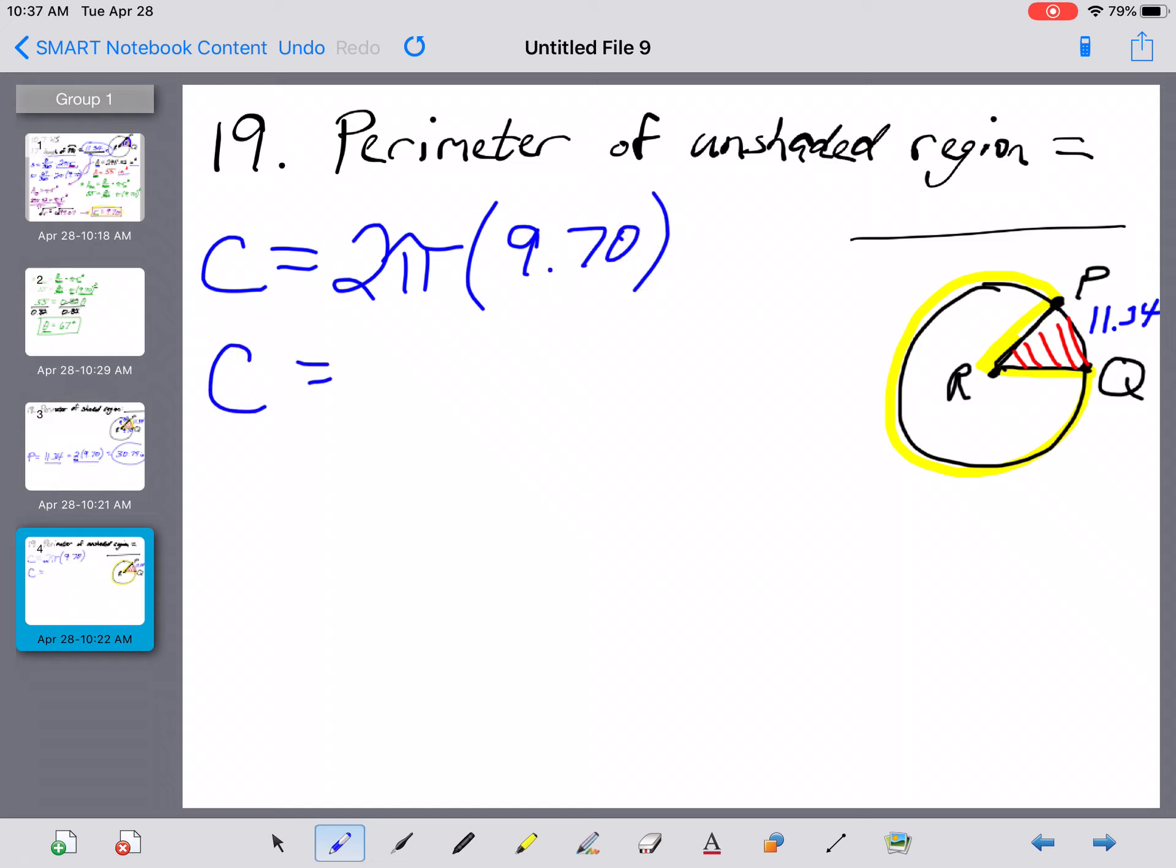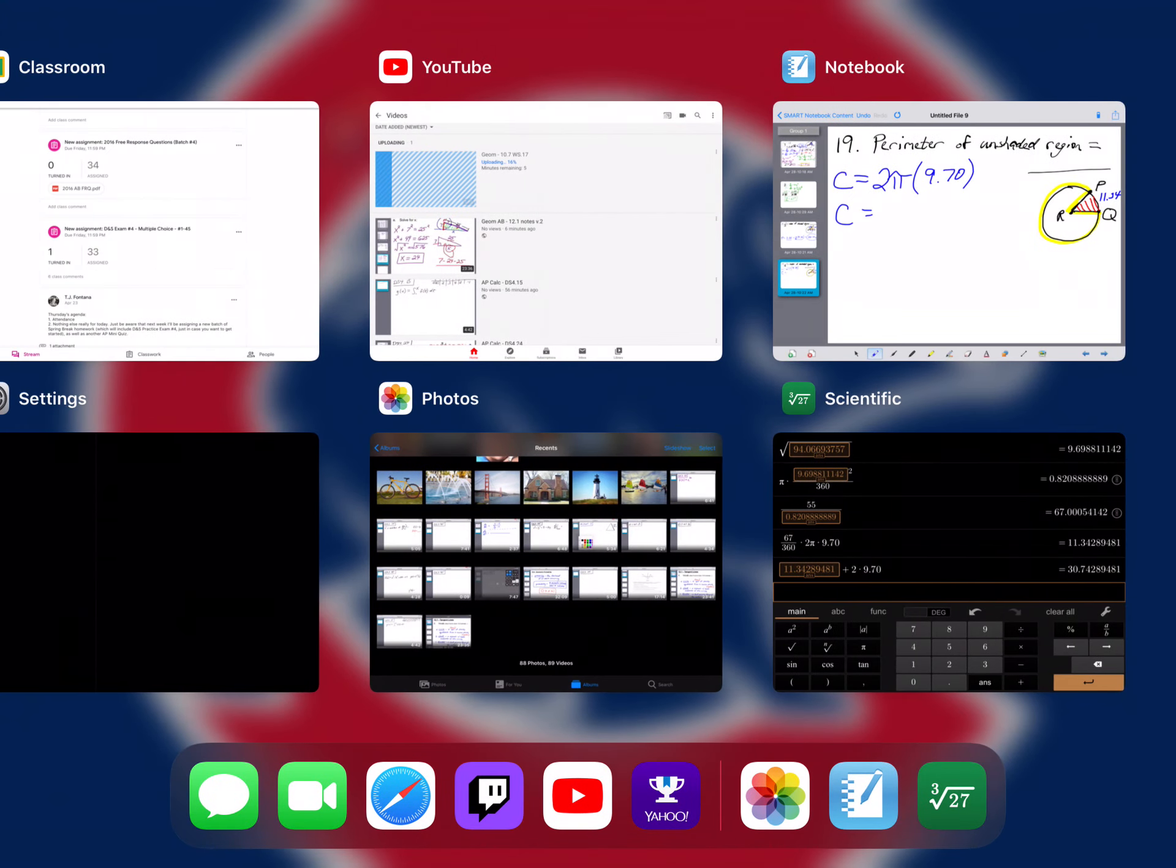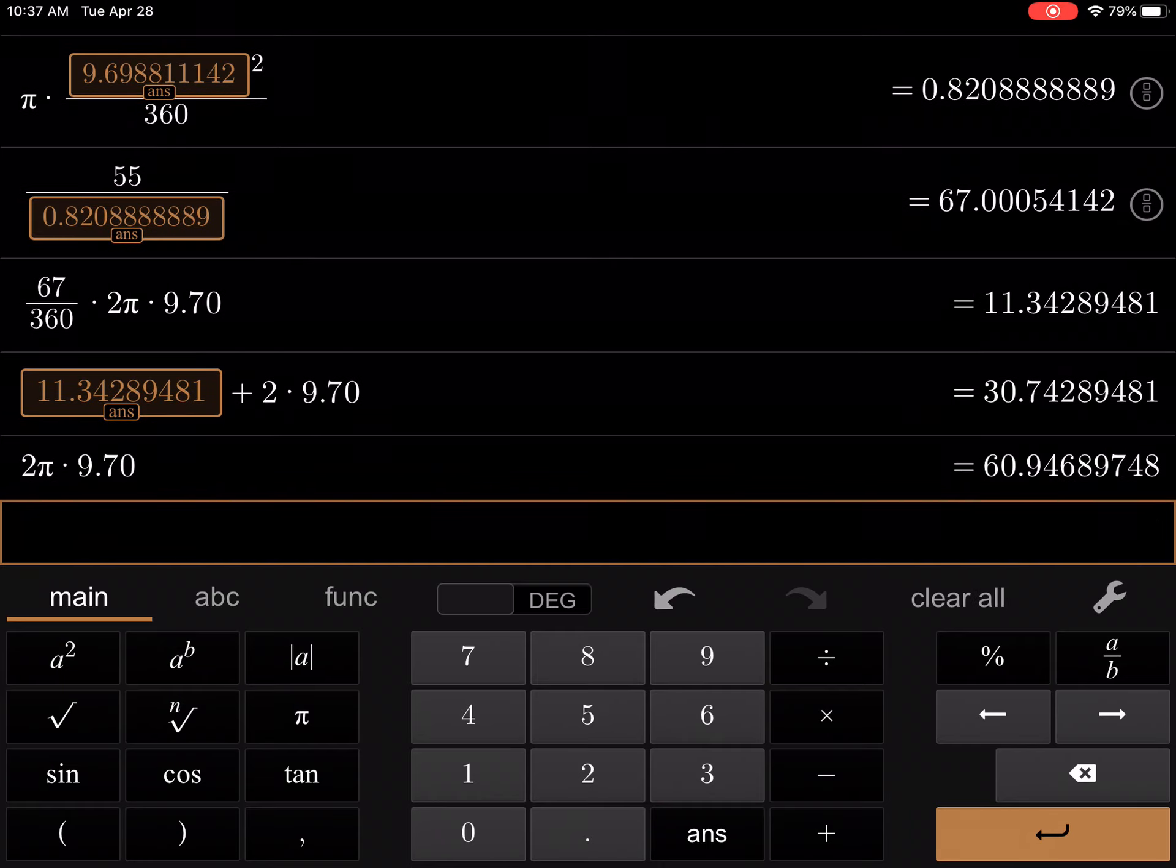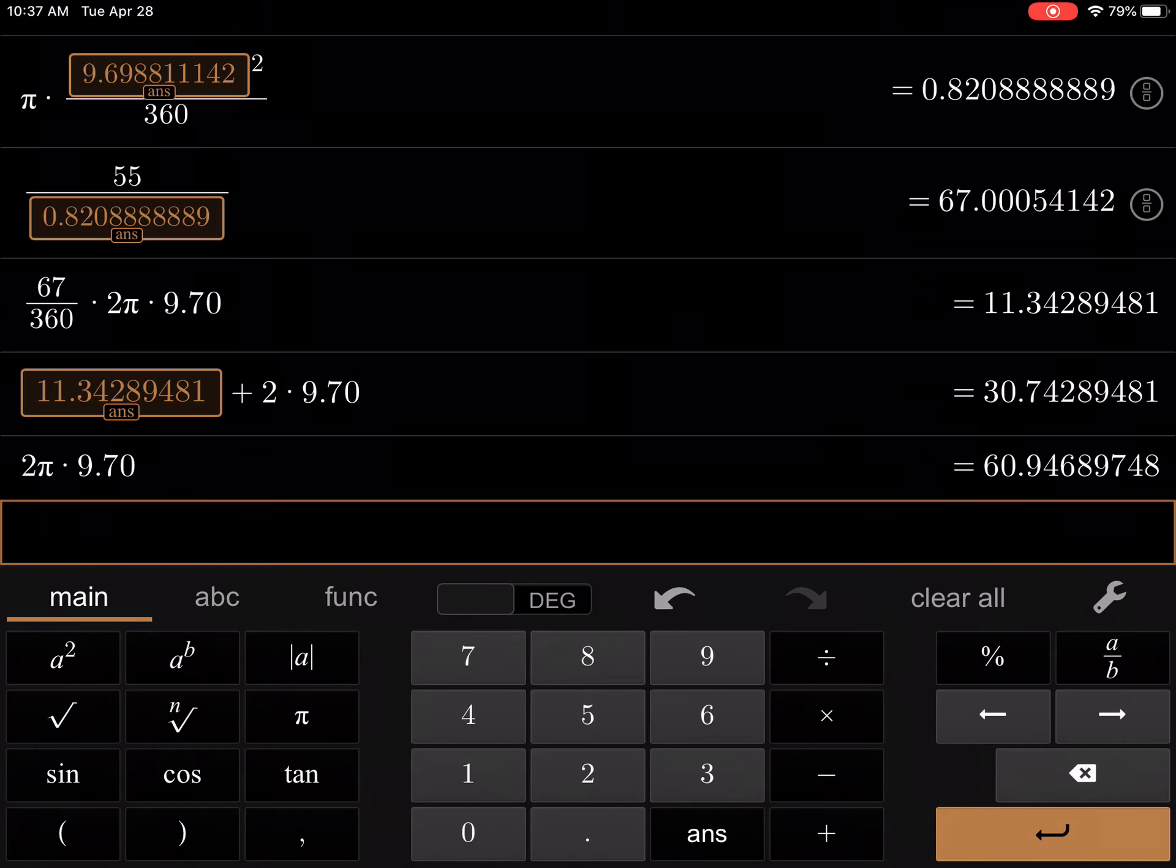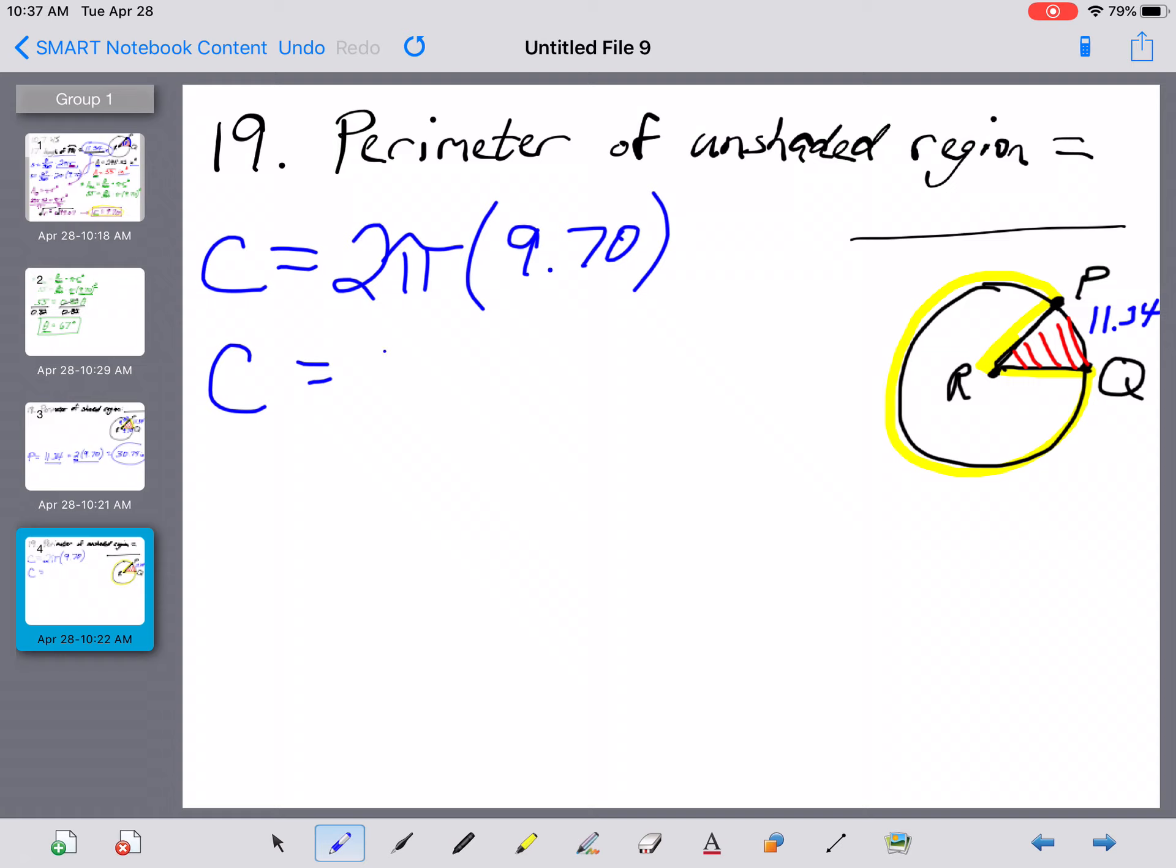So I'm going to go to my calculator and just type all that in. All right, here we go. So 2 times pi multiplied by your radius of 9.70, and that's going to get us a circumference now of 60.95. So let me write that down here. Circumference is 60.95.